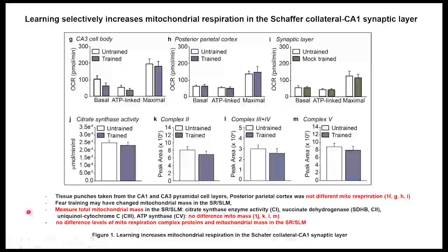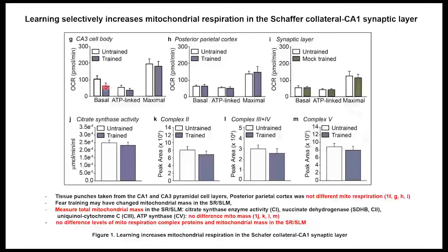There are several biopsy localizations: the CA3 cell body, posterior, and the synaptic layer. The CA3 cell body and posterior area also don't show any difference between trained and untrained mitochondria function — specifically no differences in basal OCR, ATP-linked, or maximum OCR. The posterior area also shows similar results.